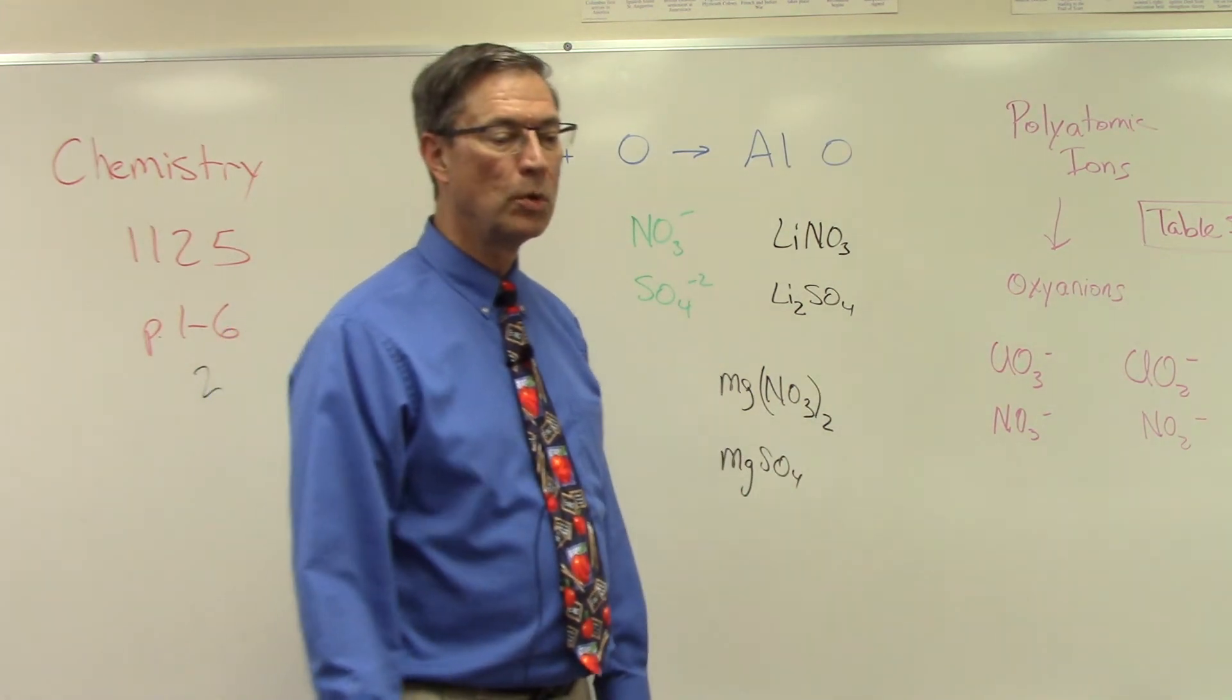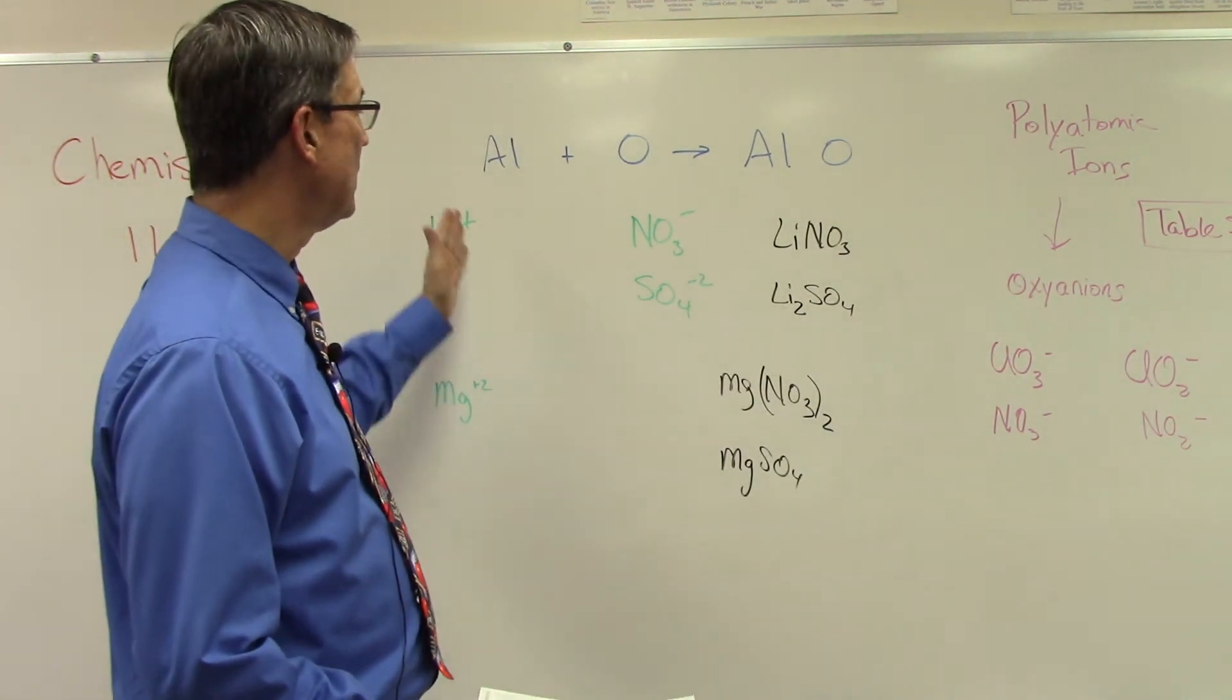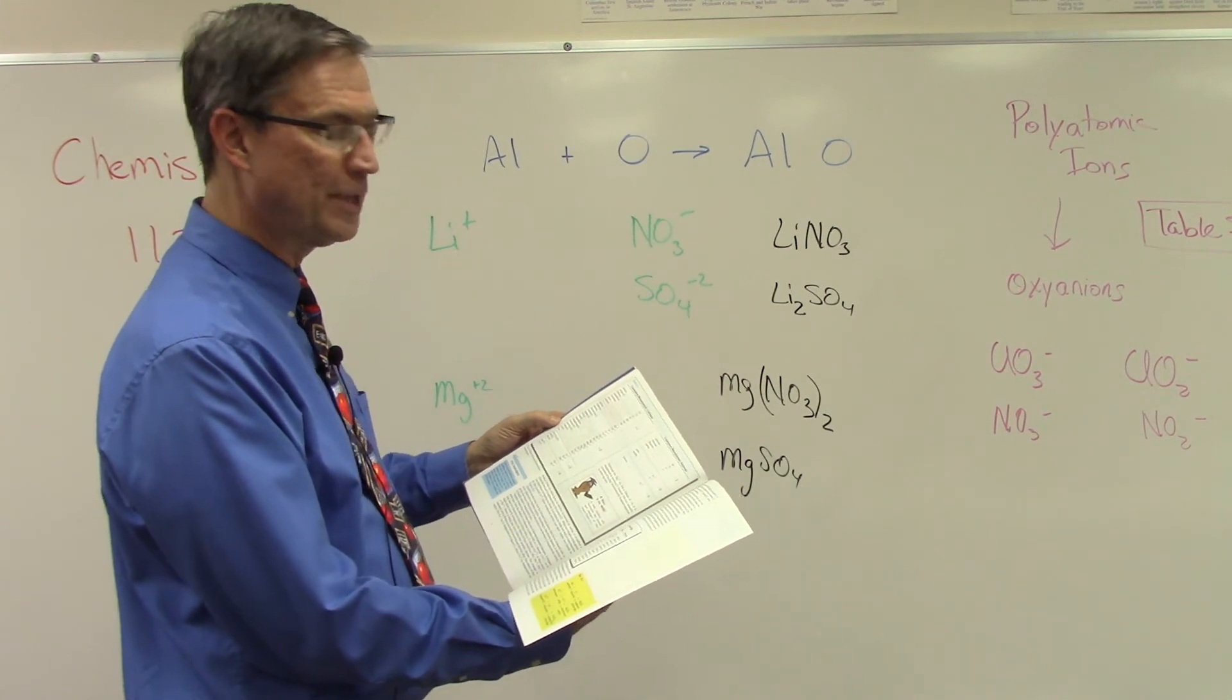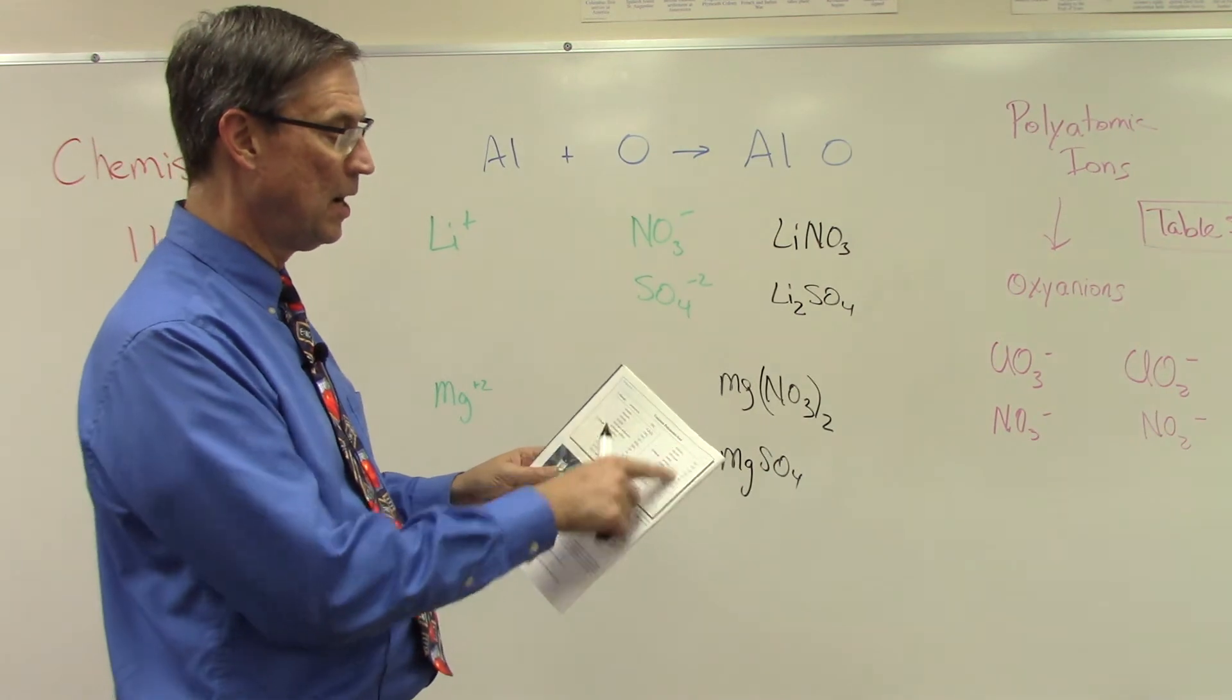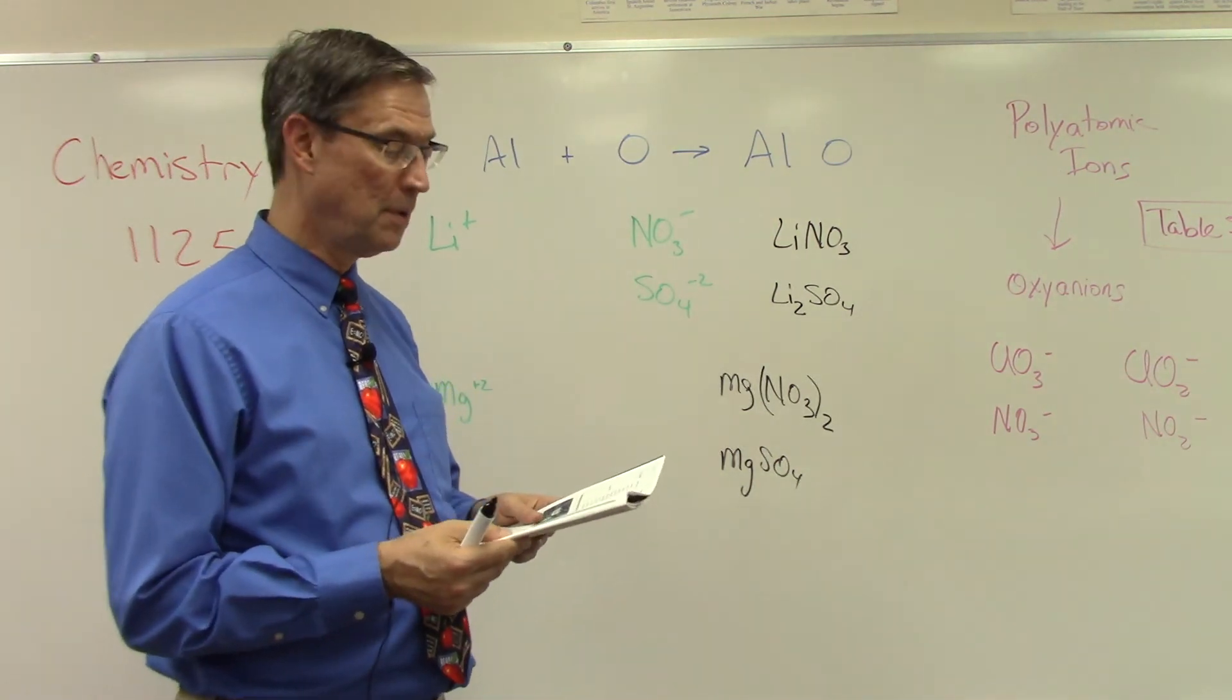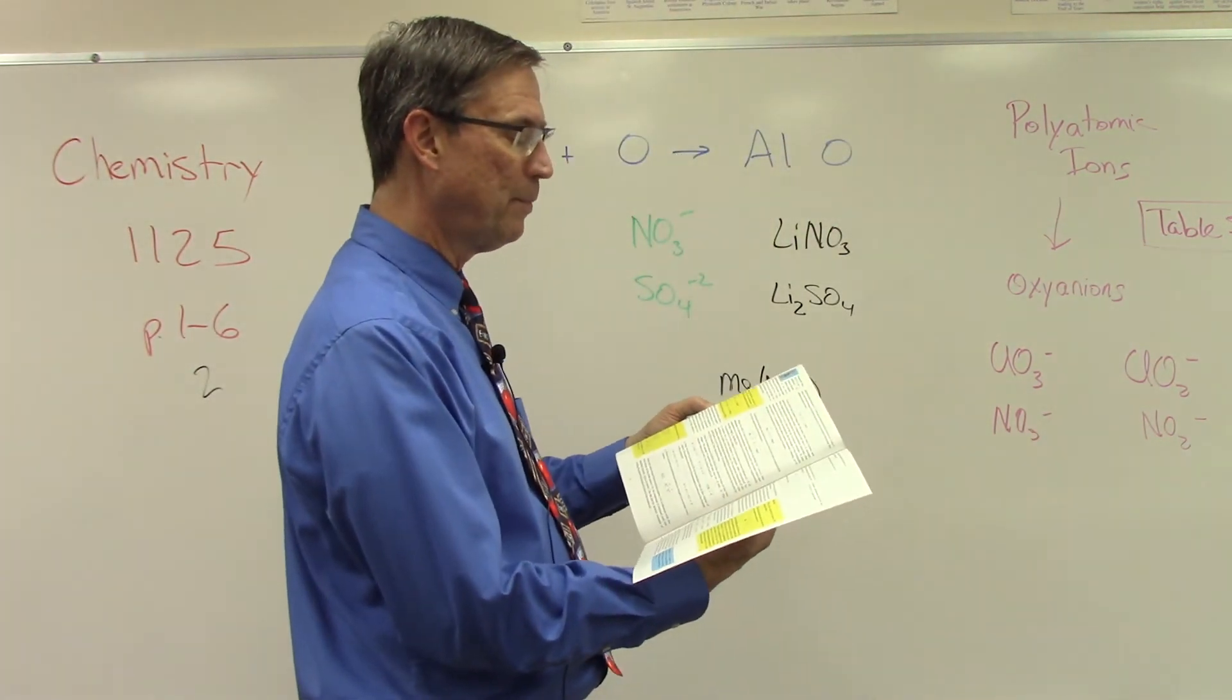So what's cool is you can take any element from that first table with all those positive ions. What table was that? 5.1. All those common monatomic cations, they call them. You can take any of those positive ones, matching up with any of these polyatomic anions, smash them together and just play with the subscripts to get them to balance.